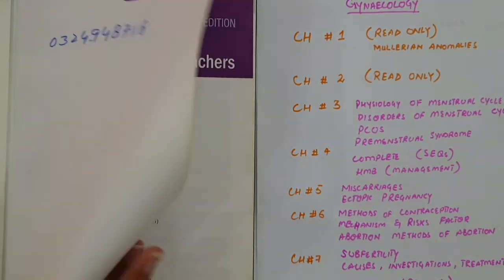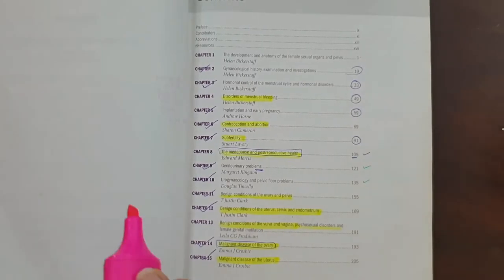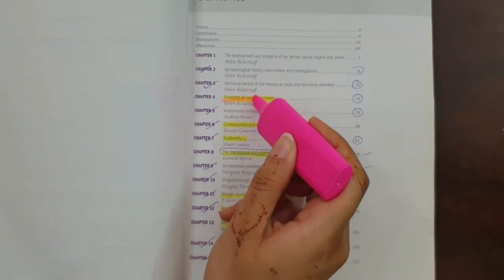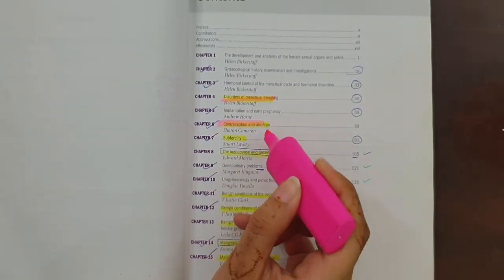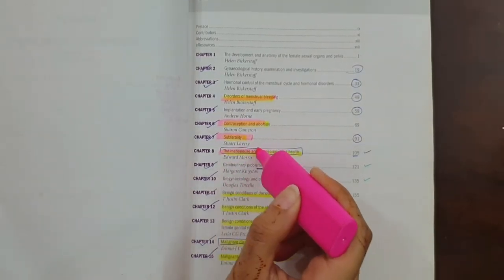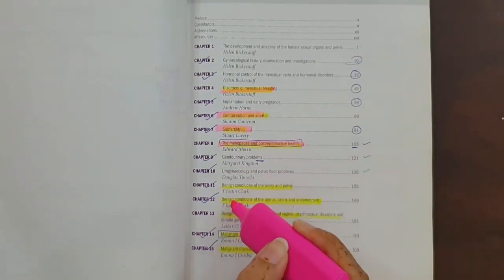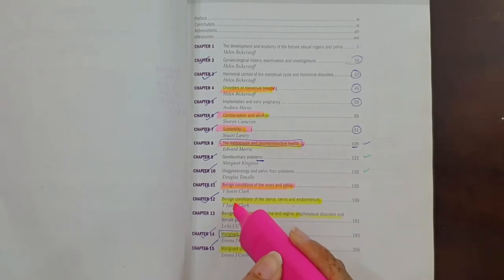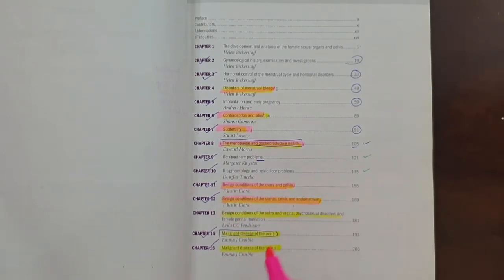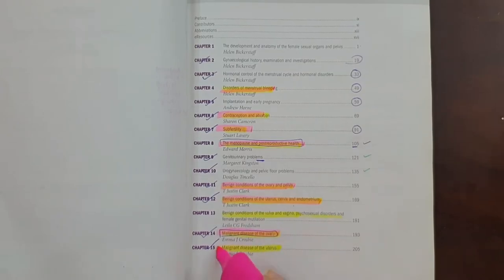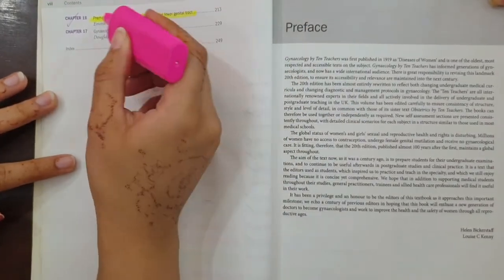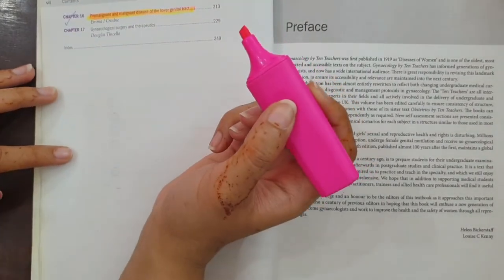First of all, I will tell you the first priority and second priority chapters. The first priority chapters in Gynecology I will highlight with pink highlighters. These are first priority chapters. The rest are second priority chapters.